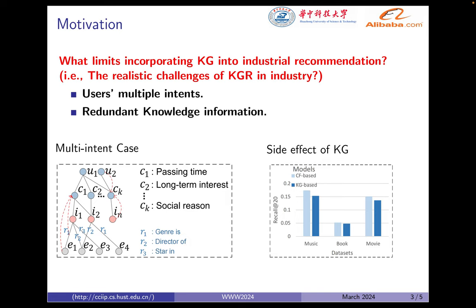The first challenge is users' multiple intents. As shown in the left figure, users may purchase items for different intents. The second challenge is redundant knowledge information. As shown in the right figure, some models with KG perform worse than normal models due to noise effects, which can be even more obvious in industrial scenarios.